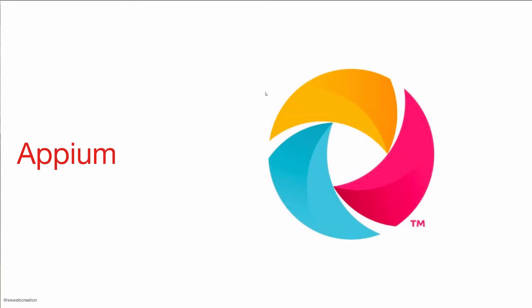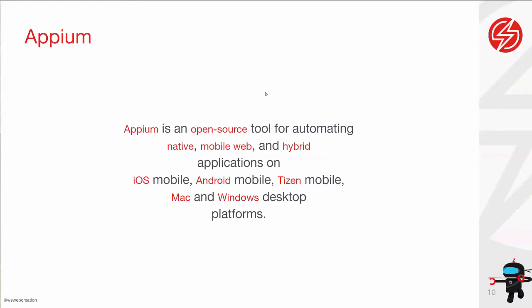So let's talk about the Appium architecture itself. Appium is an open source tool for automating native mobile, web, hybrid, progressive web applications on iOS mobile, Android, tvOS, Mac, Windows, and desktop platforms. The key is that Appium is the same platform to use for test automation on all mobile platforms it supports — you can use the same tool to automate all of them.